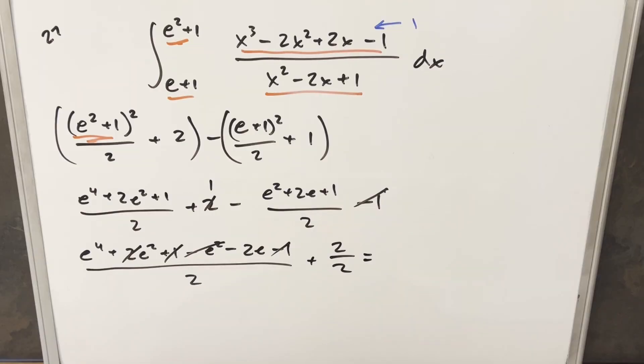No. So putting it all together for my final solution, we get just e to the 4 plus e squared minus 2 e plus 2 all over 2, and that's it.